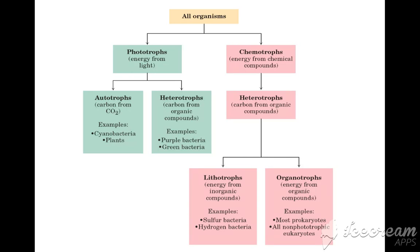Green bacteria are also heterotrophs. Chemotrophs take their energy from chemical compounds and are further divided into heterotrophs, meaning carbon from organic compounds. Heterotrophs are divided into two types: lithotrophs and organotrophs. Lithotrophs take their energy from inorganic compounds — examples are sulfur bacteria and hydrogen bacteria. Organotrophs take their energy from organic compounds; examples are most prokaryotes and all non-phototrophic eukaryotes.